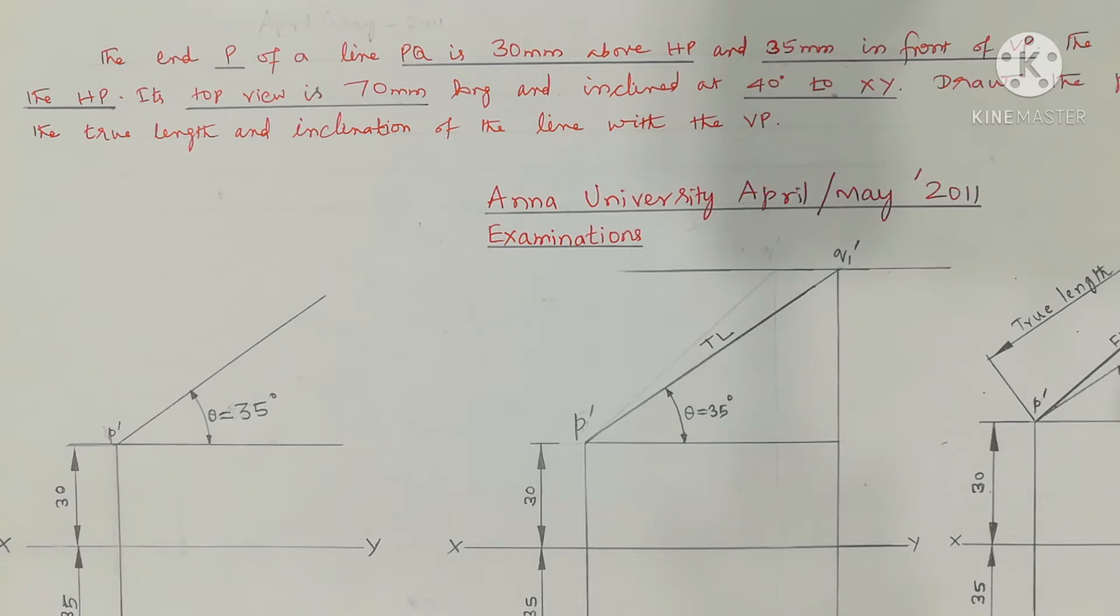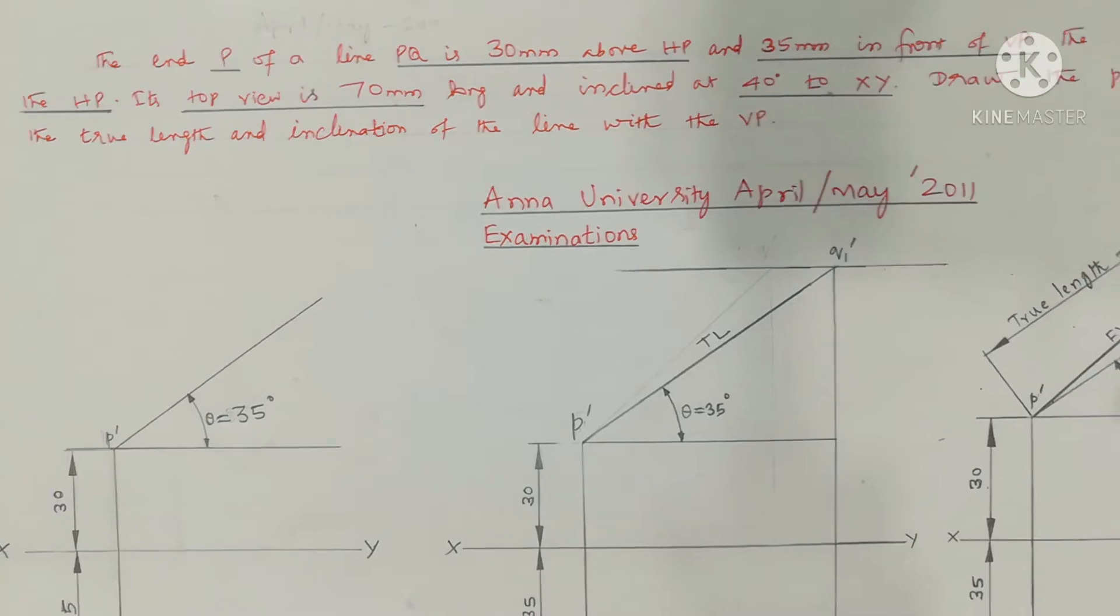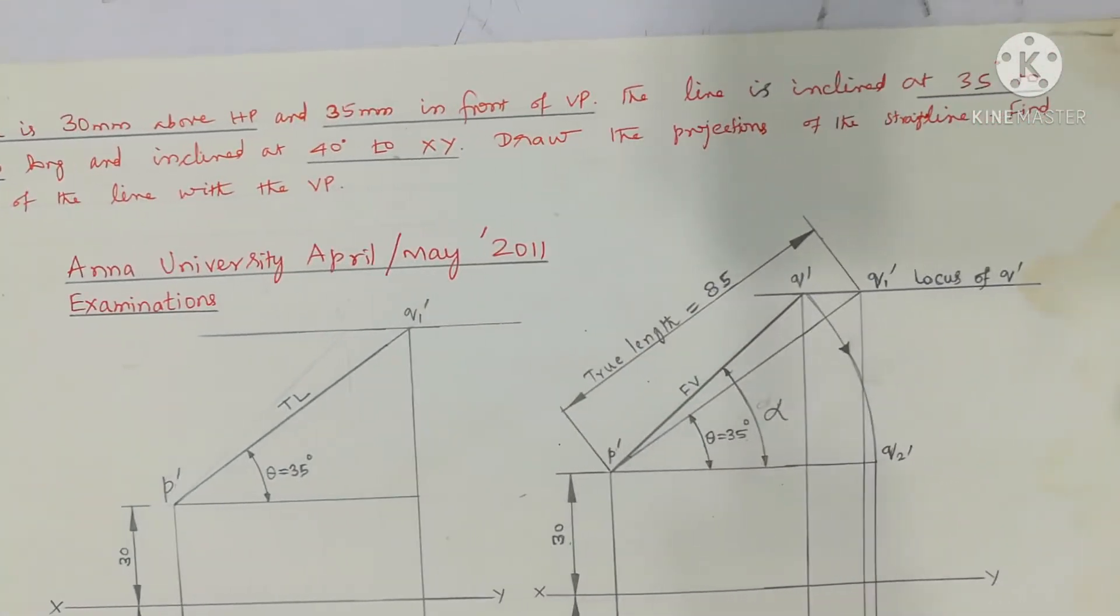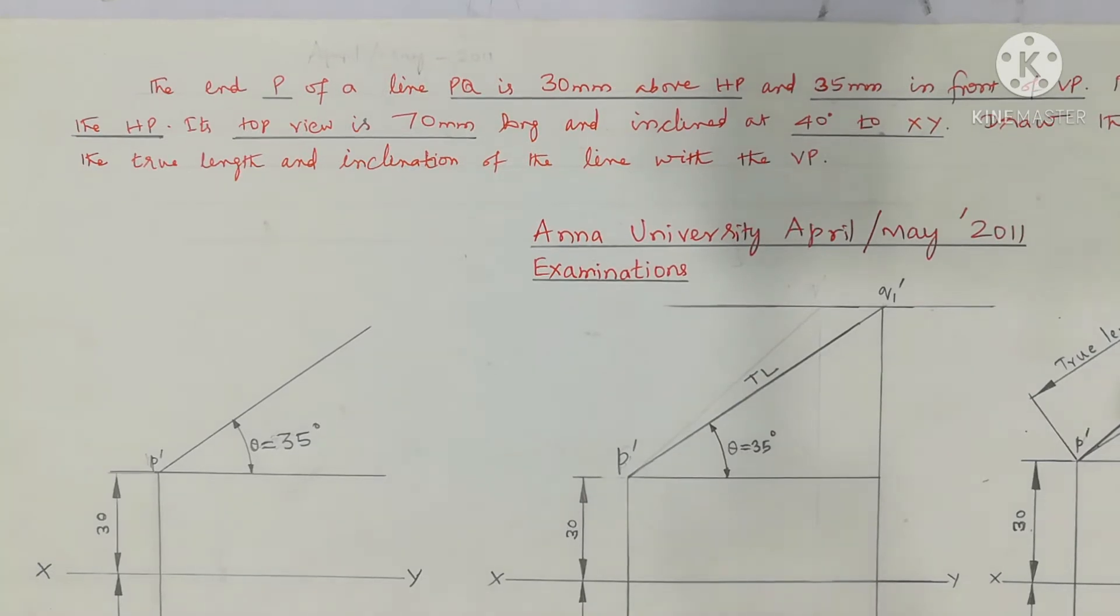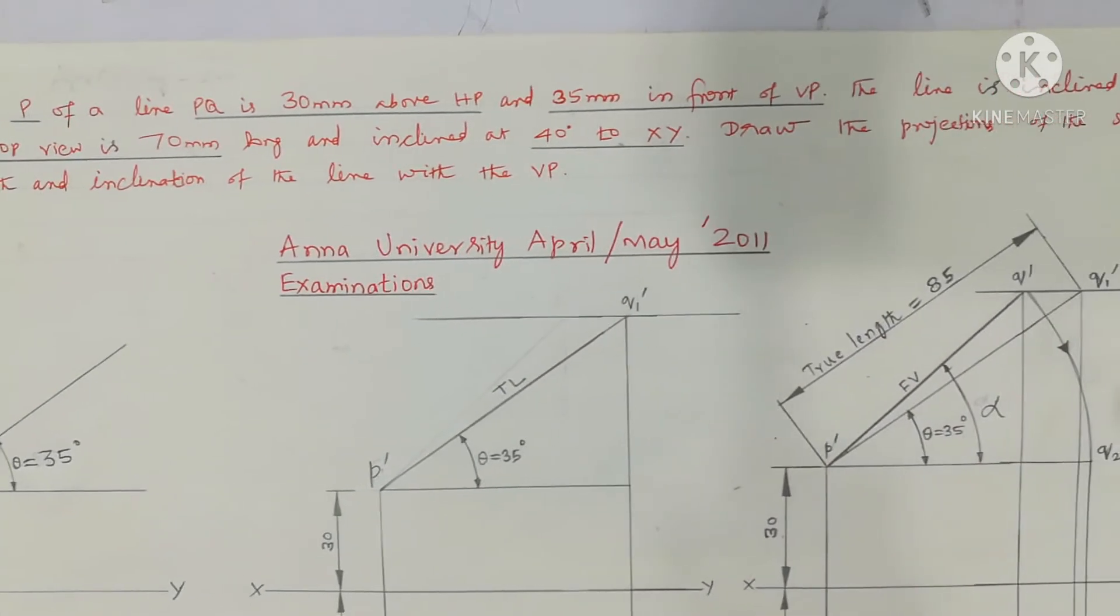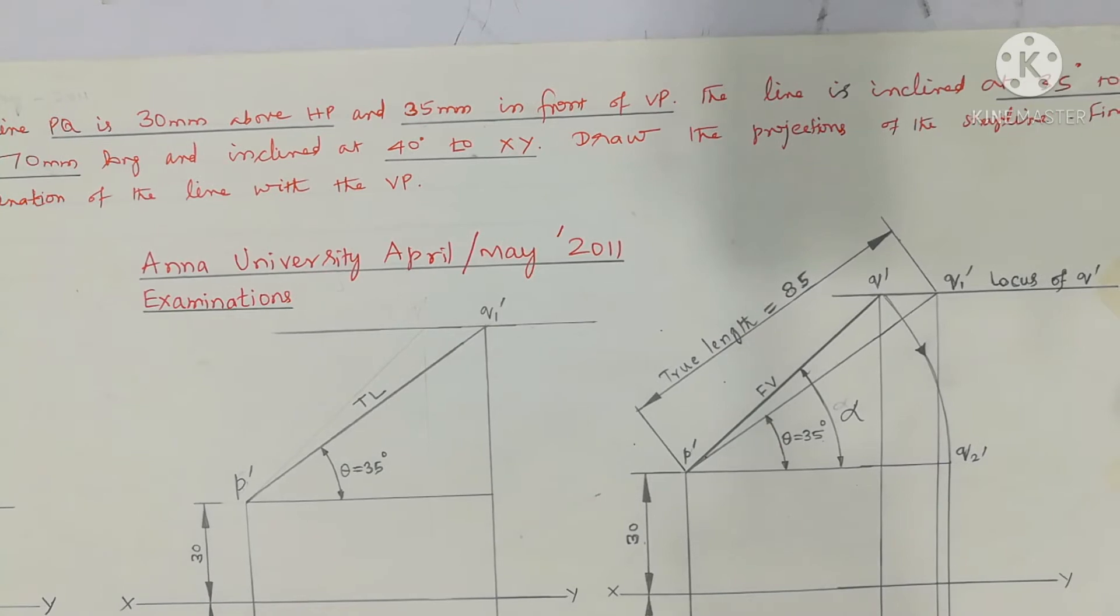The NDP of a line BQ is 30mm above the HP and 35mm in front of VB. The line is inclined at 35 degree to the HP. The top view is 70mm long and inclined at 40 degree to XY. Draw the projections of the straight line.